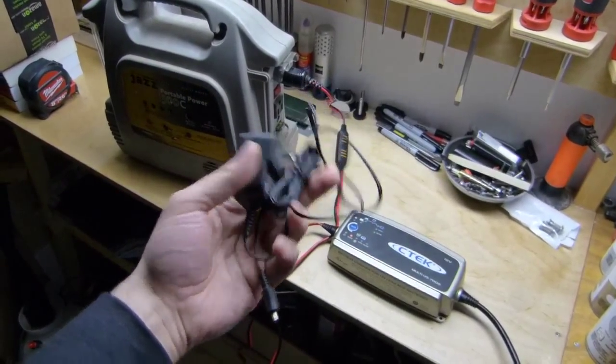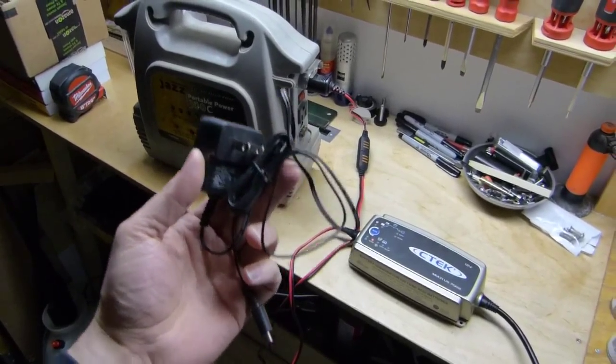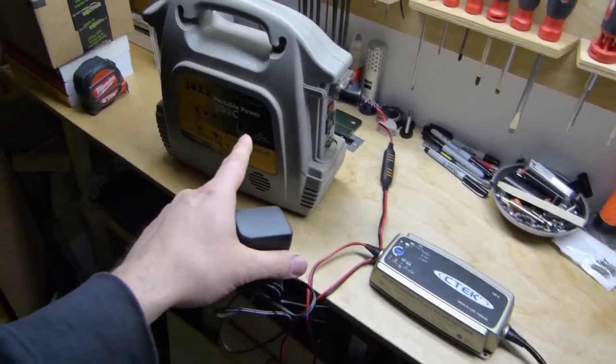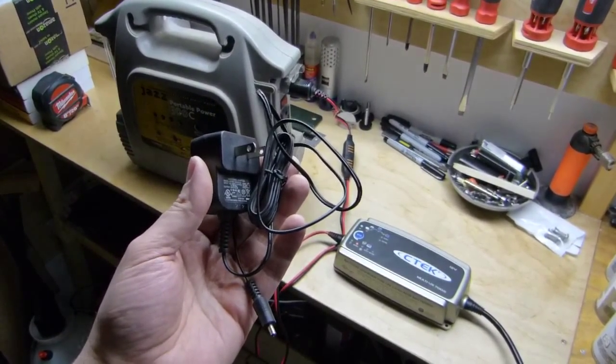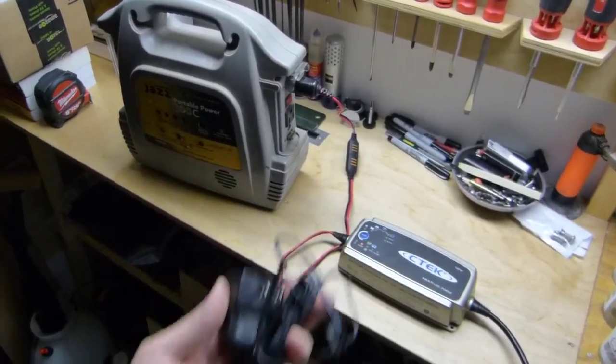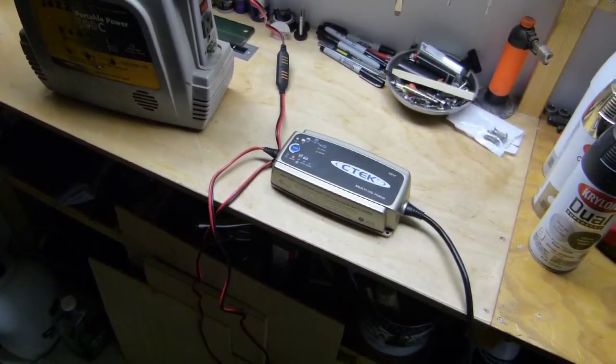The little power adapters that come with these things, some of these are like 700 milliamps. And they say in the instruction manuals for a lot of these jumper packs that if you plug it into the wall, it's going to take 72 hours to charge. So it'll be 3 days charging with this little thing versus 5 hours with a real charger.